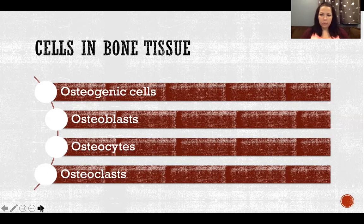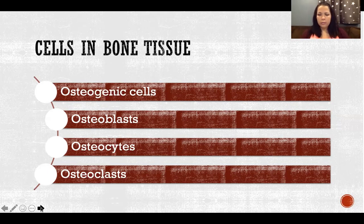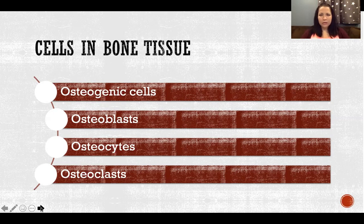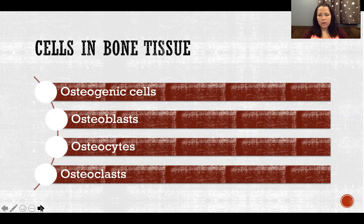We have four types of cells in bone tissue: osteogenic cells, osteoblasts, osteocytes, and osteoclasts. Osteogenic cells are basically stem cells in bone tissue, constantly dividing and creating new cells — specifically osteoblasts. Any cell ending in 'blast' with a B is a builder cell, something that's producing or making something. Any cell ending in 'clast' with a C is a cell that is breaking things down. Osteoblasts are the bone-building cells.